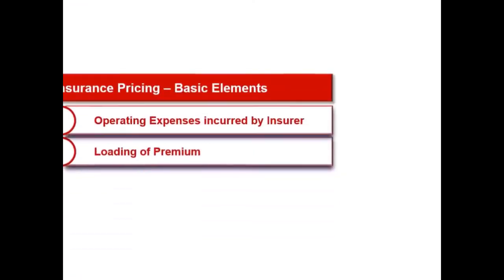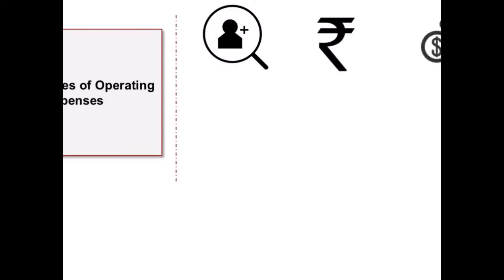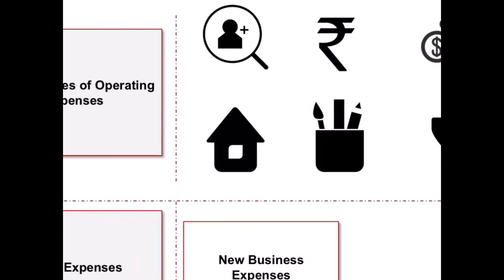In this next video of the lesson, Pricing and Valuation in Life Insurance, we will learn the operating expenses incurred by the insurer and loading of premium. There are various types of operating expenses that life insurers incur, such as agents' training and recruitment, commissions of agents, staff salaries, office accommodation, office stationery, electricity charges, and other miscellaneous expenses. All these have to be paid from premiums collected. A life insurer incurs two major types of expenses: new business expenses, incurred at the beginning stage of the contract, and renewal expenses, incurred during subsequent years.